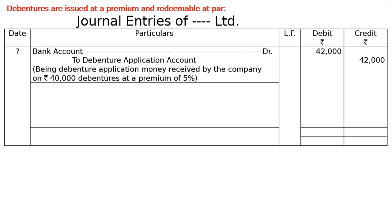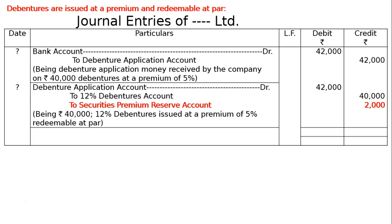Since the debentures are redeemable at par, there is no premium on redemption. The second entry: debenture application account debited Rs 42,000, to 12% debentures account Rs 40,000, and to securities premium reserve account Rs 2,000. Being Rs 40,000, 12% debentures issued at a premium of 5%, redeemable at par.